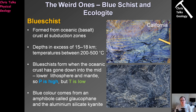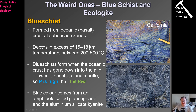This one is called a blueschist, forming towards the top where the oceanic crust is in contact with the continental crust. Blueschists have a basalt protolith — this is the oceanic crust that's altering. They form at depths typically in excess of 15 to 18 kilometres, and temperature will typically be between 200 and 500 degrees Celsius. Blueschists form when the oceanic crust has gone down into the mid to lower lithosphere.